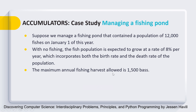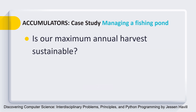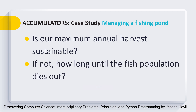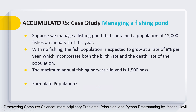At the beginning we have an initial population of 12,000. The maximum annual fishing harvest allowed is 1,500. We have to formulate a population formula to understand how the fish population grows year by year. Our objective is to find out whether the maximum annual harvest is sustainable or not, and if not, how long until the fish population dies out.